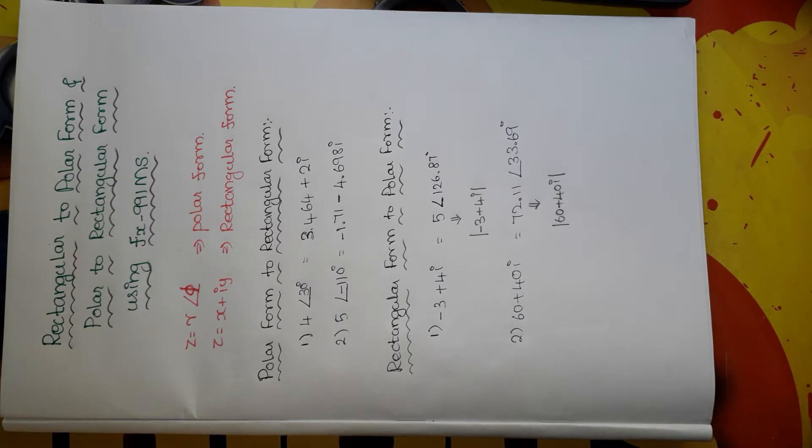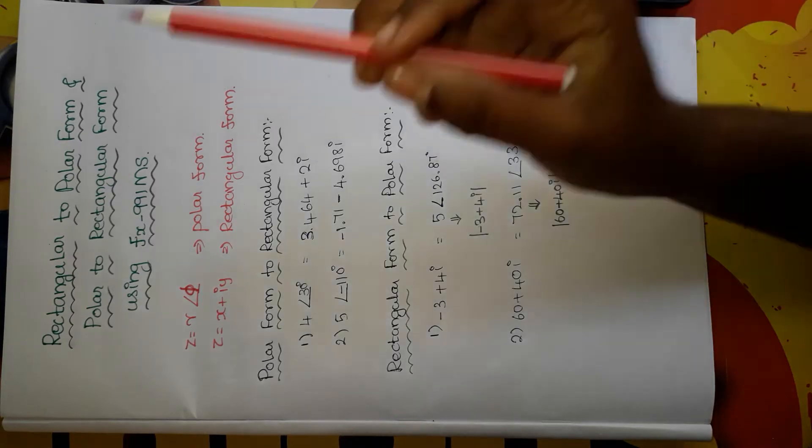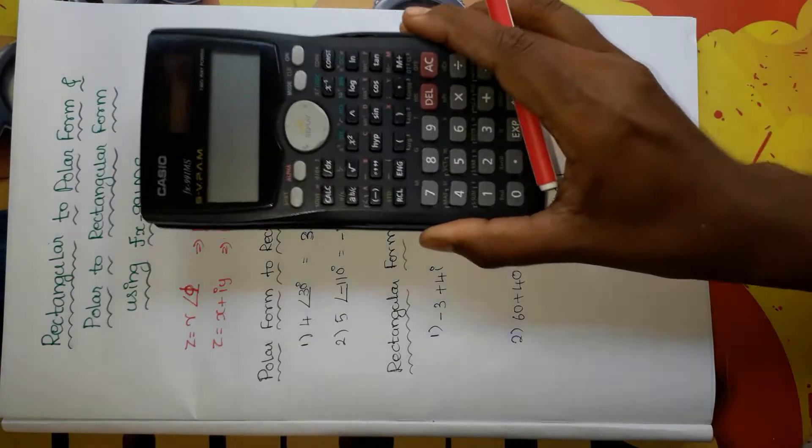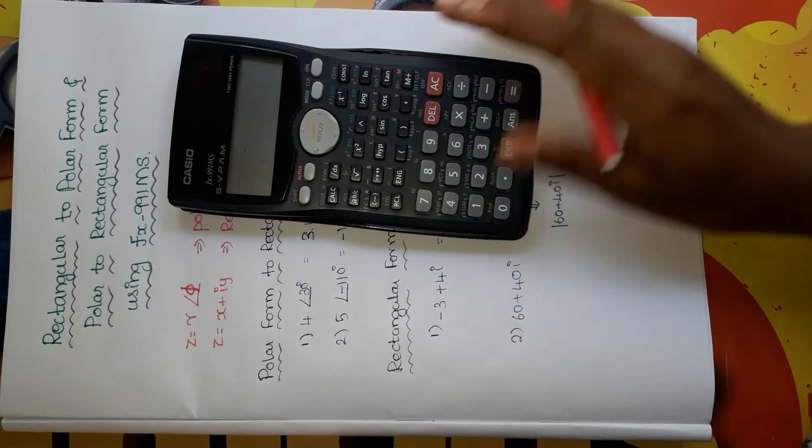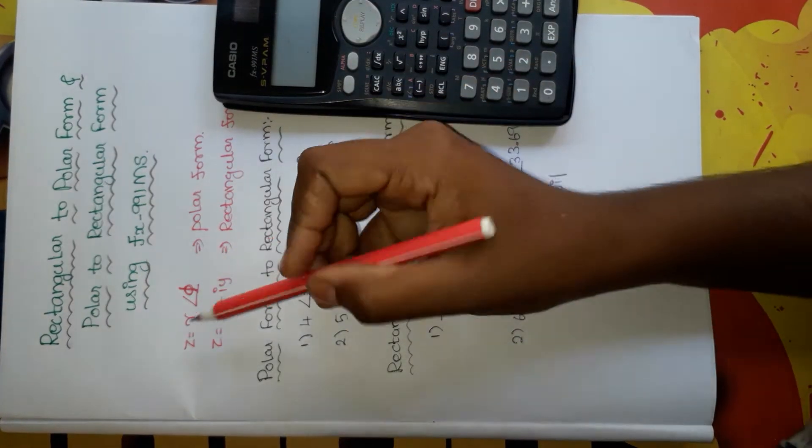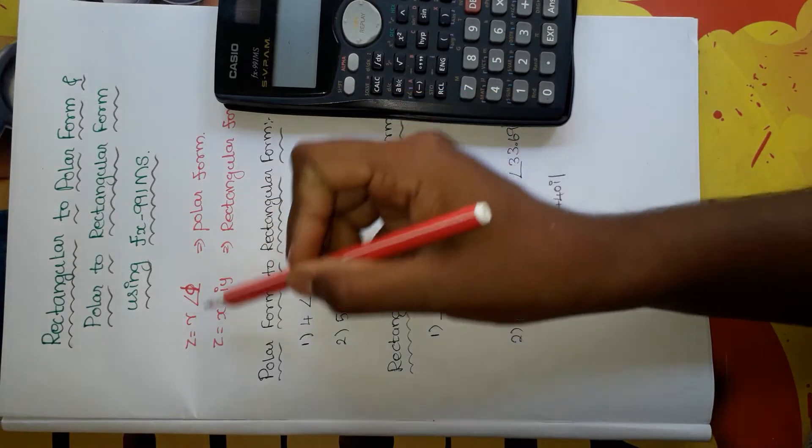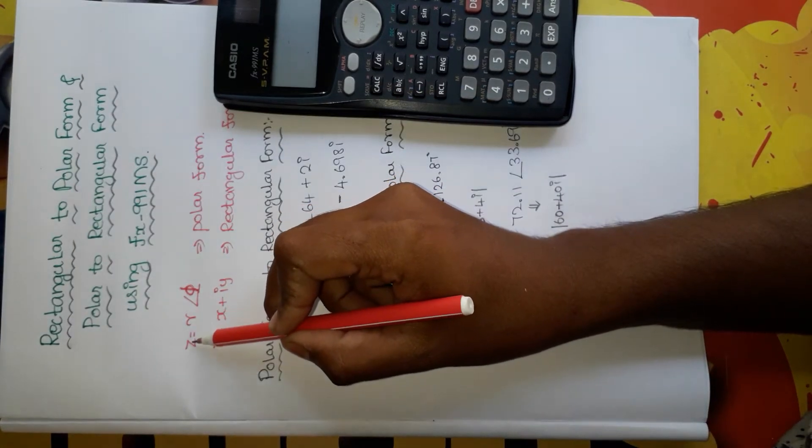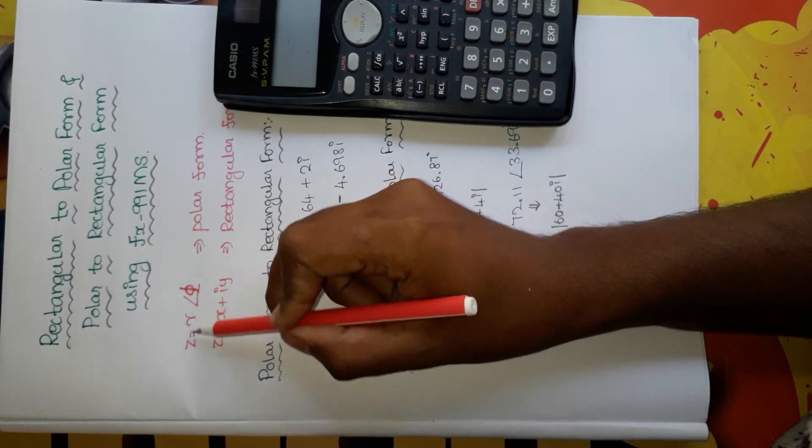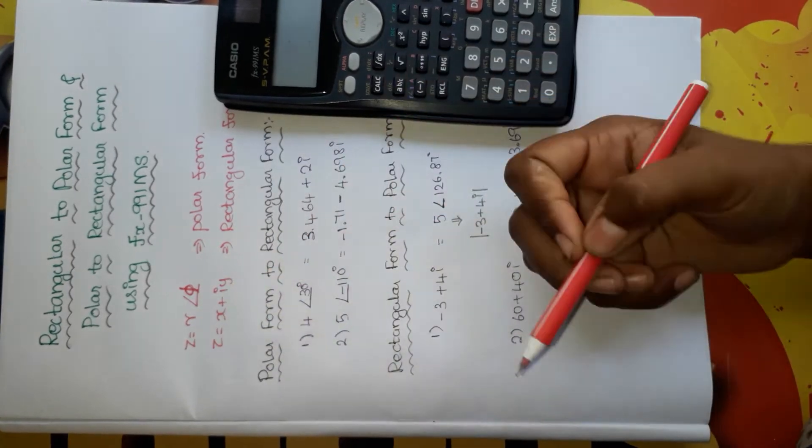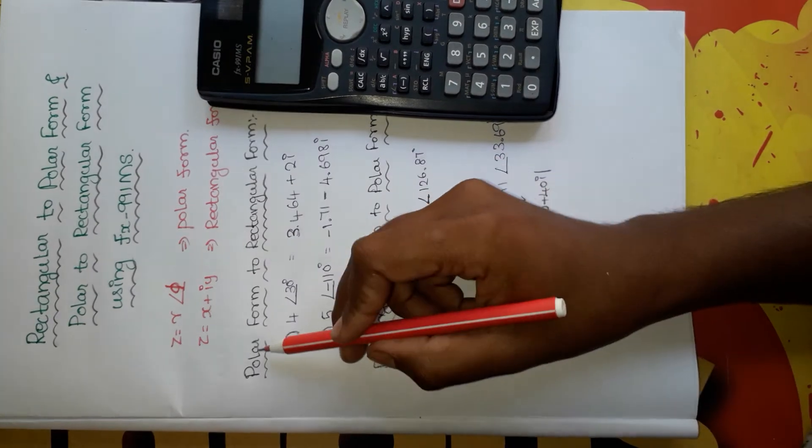Hello friends, welcome to this video. In this video we are going to see how to convert rectangular to polar form and polar to rectangular form using a 991 MS calculator. This is the polar form and this is the rectangular form. Here r is the magnitude of z and phi is the phase of z. Here x is the real part and y is the imaginary part.